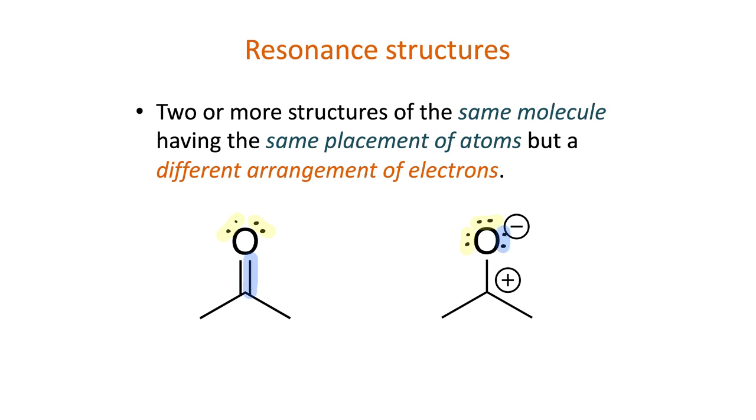I can draw a curved arrow to describe that change in electron configuration. As a result of the change, we have a negative one formal charge on the oxygen atom, and a plus one formal charge on the central carbon atom.